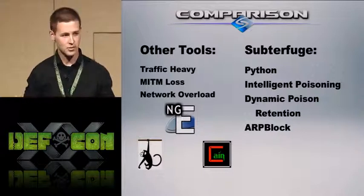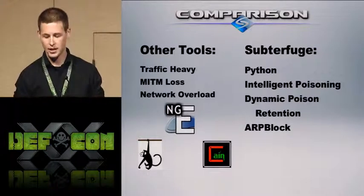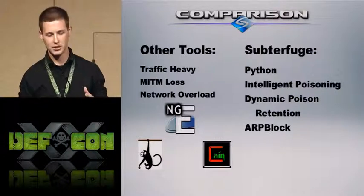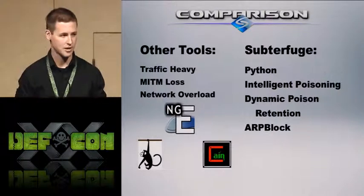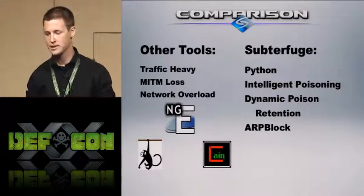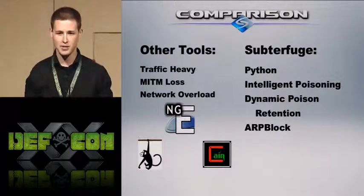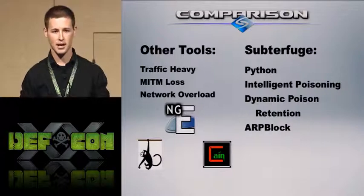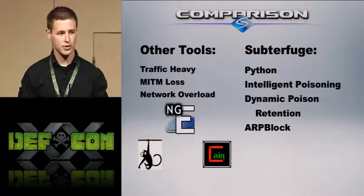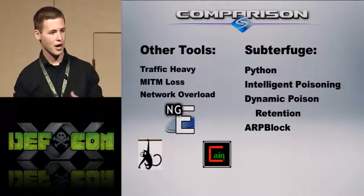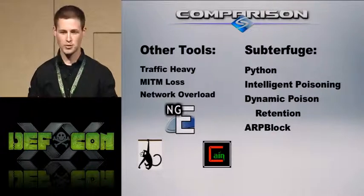Subterfuge is written in Python, it's open source — that's a pro. It also has what we like to call intelligent poisoning and dynamic poison retention. Intelligent poisoning allows you to change the throttle of how fast ARP poison packets come out. Instead of constantly doing ARP scans and spamming every single IP address, it's intelligent and sends out one packet on a certain threshold. Dynamic poison retention actually listens for ARP communications between the router and clients that would typically make you lose that man-in-the-middle position.